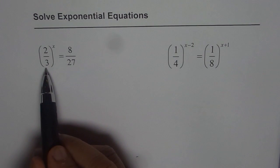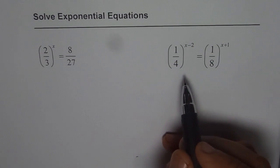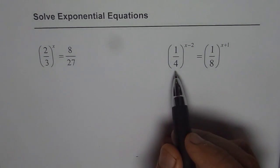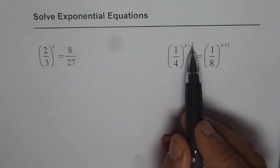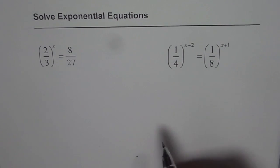We have 2 over 3 to the power of x equals 8 over 27. That's the first question. The next one is 1 fourth to the power of x minus 2 equals 1 over 8 to the power of x plus 1.